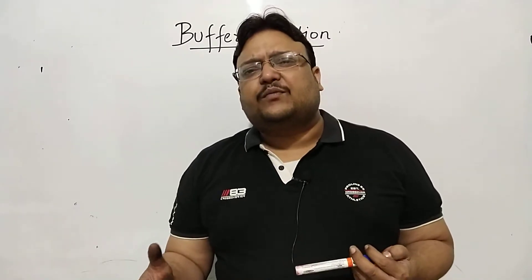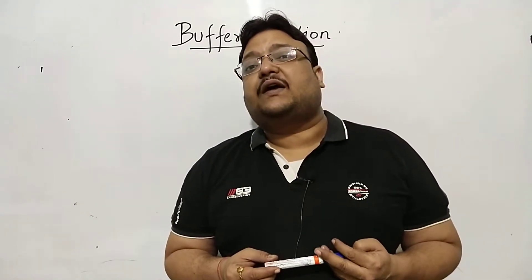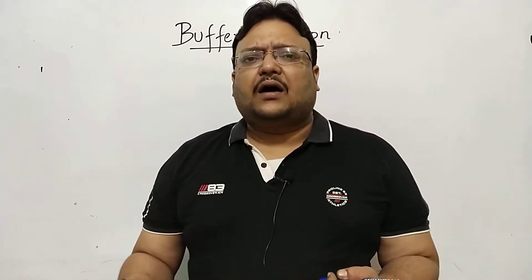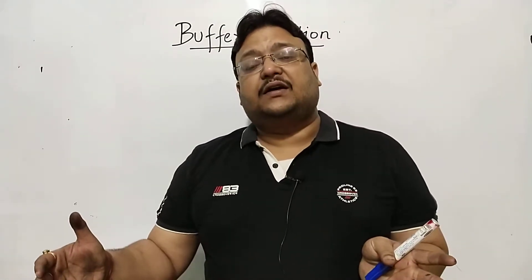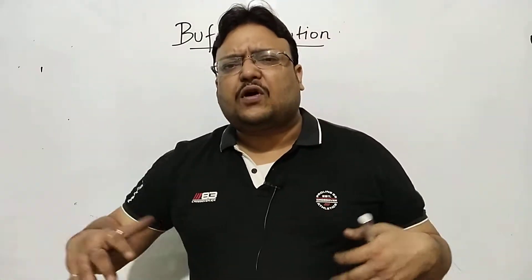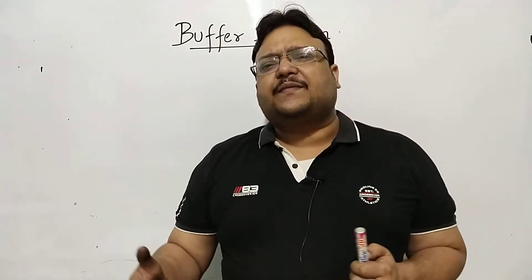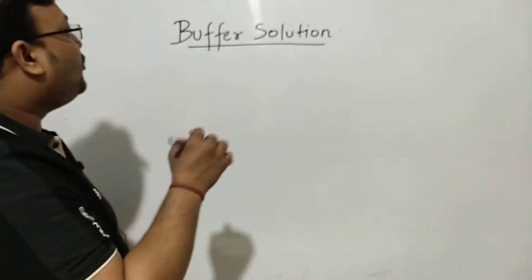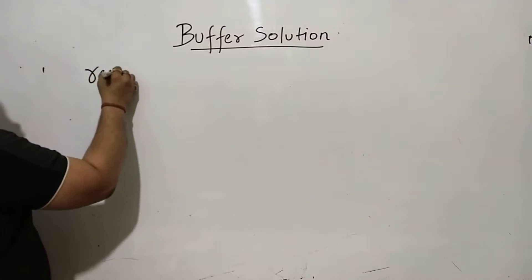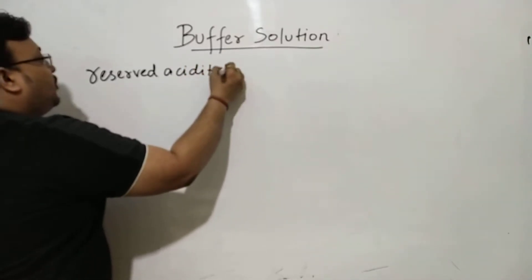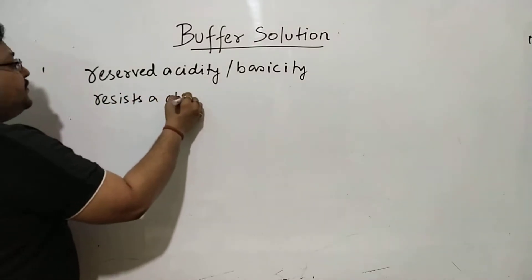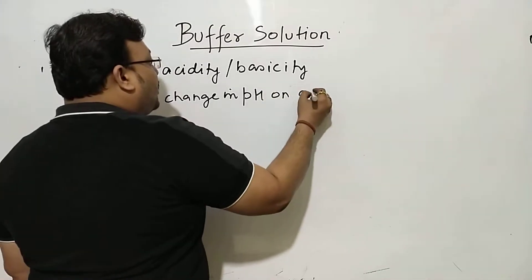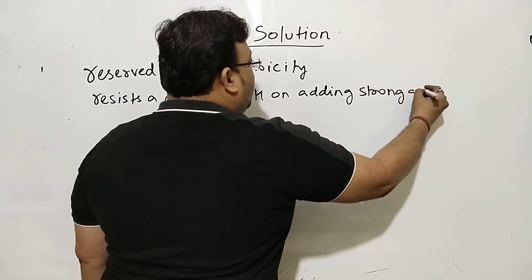We'll begin with the definition introduced in most textbooks. A buffer is supposed to be a solution having reserved acidity or basicity. Reserved means something which is hidden, which will come in use in a crisis — like the Reserve Bank of India or the reserve fat in a body. So it's a solution having hidden acidity or basicity which can counter a strong acid or base and control the change in pH. It's also a solution which resists a change in pH, even on adding a small amount of strong acid or strong base.